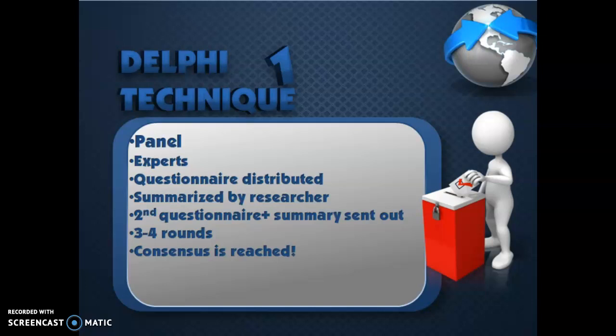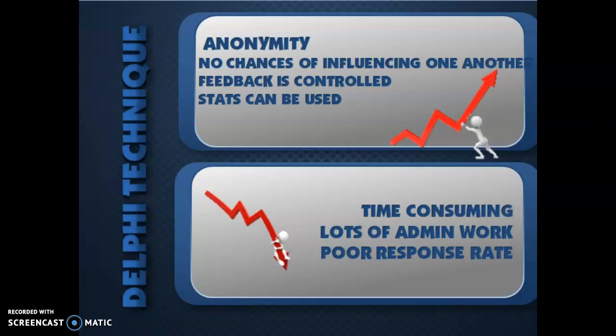So the advantages of using the Delphi technique include things like anonymity, which means nobody knows who said what. There is no chance of influencing one another because all these experts on this panel live across the globe. Feedback is controlled in a central place by the researcher. But statistical methods can be used to classify responses.